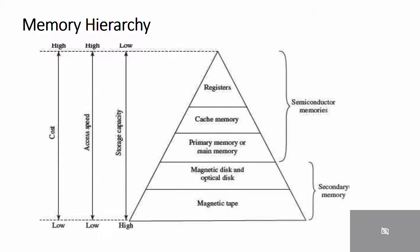Memory hierarchy system consists of all storage devices from auxiliary memory to main memory to cache memory. As you go down in the hierarchy: cost per bit decreases, capacity increases, access time increases, and frequency of access by the processor decreases.